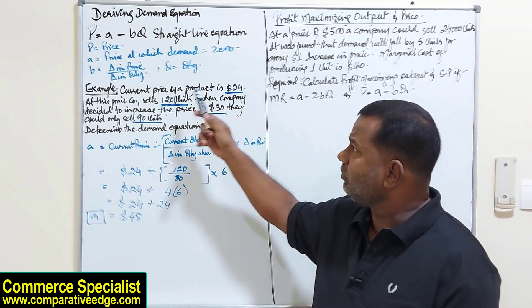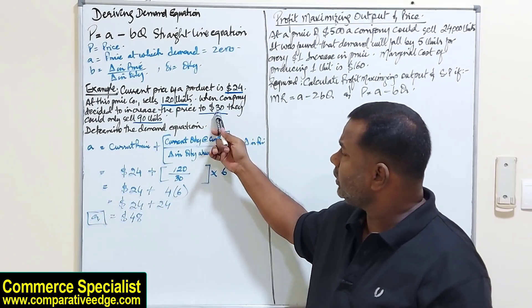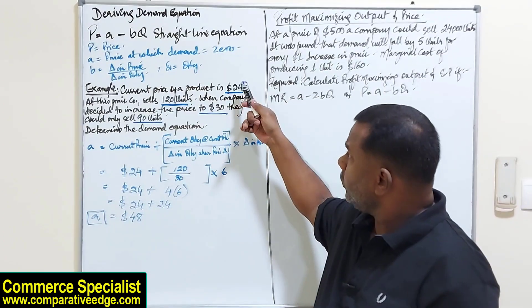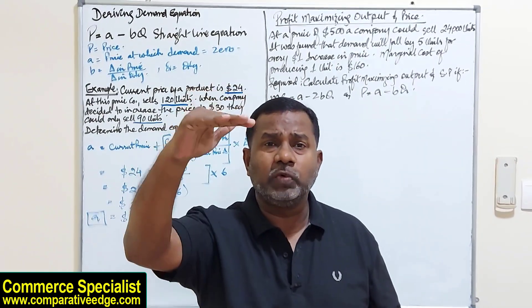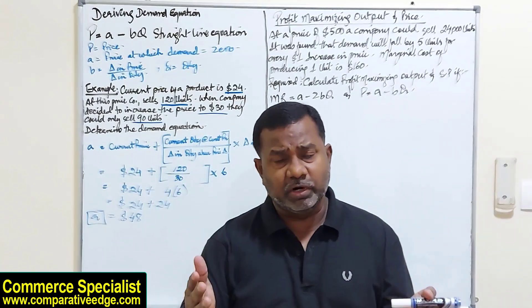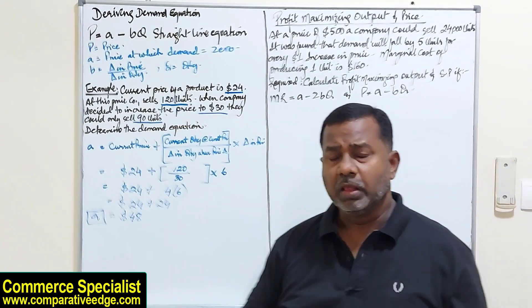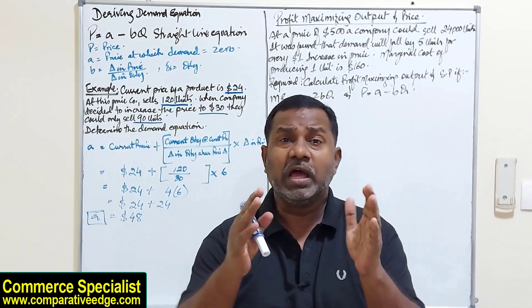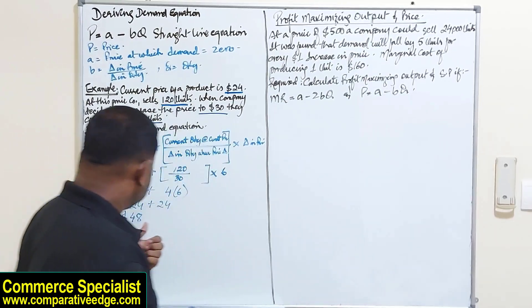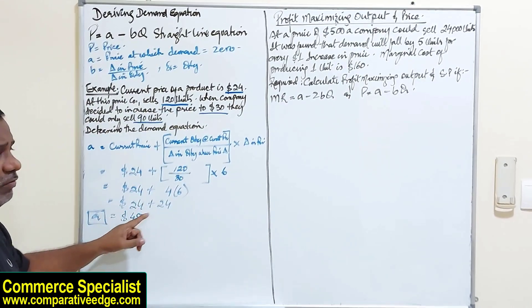A $6 increase in price — from $24 to $30 — brought quantity demanded from 120 to 90. So if we keep increasing the price, a time will come where demand will be zero. That price is $48. If you charge $48 in this market, nobody will buy your product. Now we calculate B: B = change in price / change in quantity = 6 / 30 = 0.2.